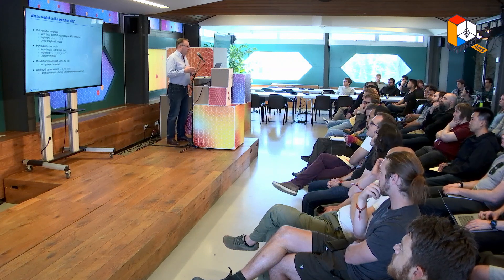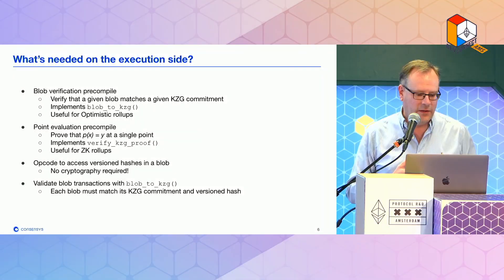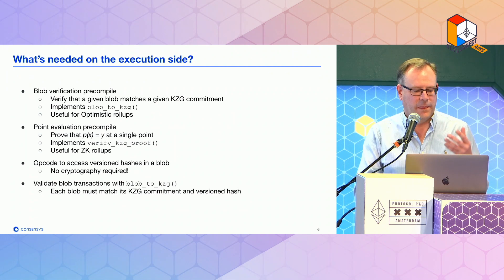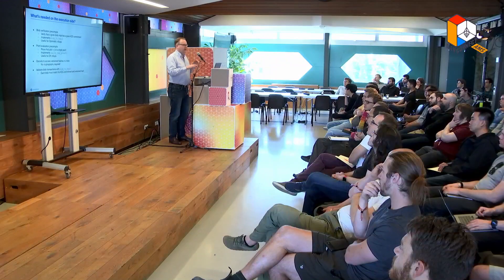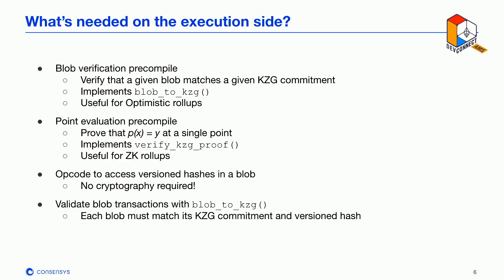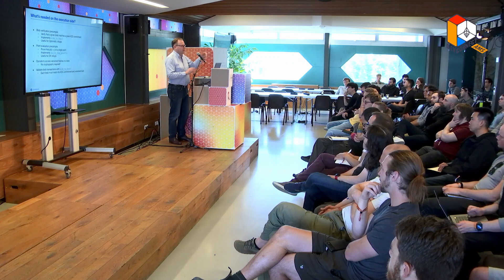Both execution side and consensus side will need to make some changes to take advantage of this KZG commitment technology. On the execution side, there are two precompiles, and these are for the use of rollups. There's a blob verification precompile — that's blob to KZG, making the commitment — useful primarily for optimistic rollups. And then we've got a point evaluation precompile, which verifies that the data we have is the correct data for that point — a wrapper around verify KZG proof. There's also an extra opcode, which is trivial — just looking up one of the commitments in a block. And when verifying a transaction containing a blob, we need to check that the KZG commitment is correct, which is the same as the blob verification precompile.